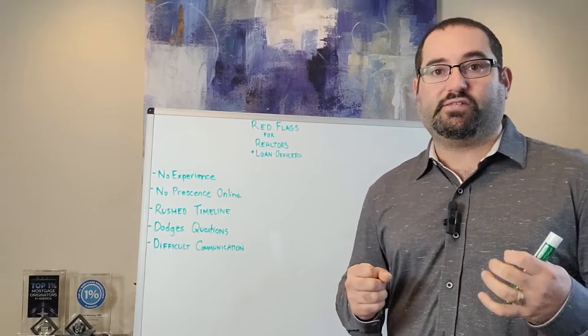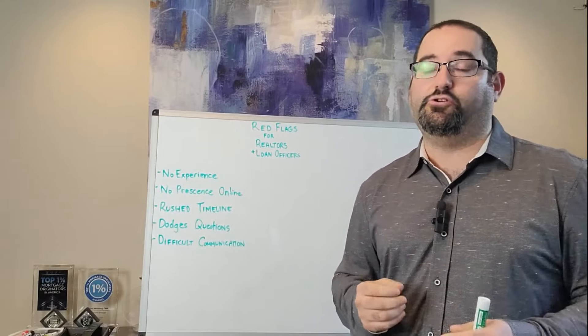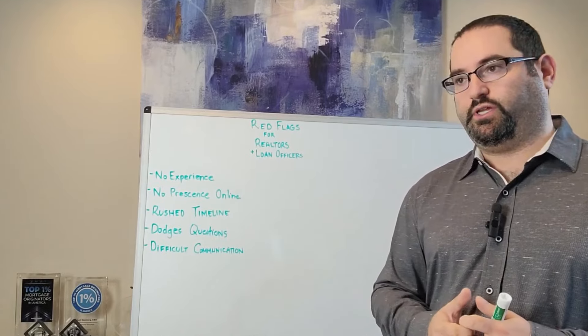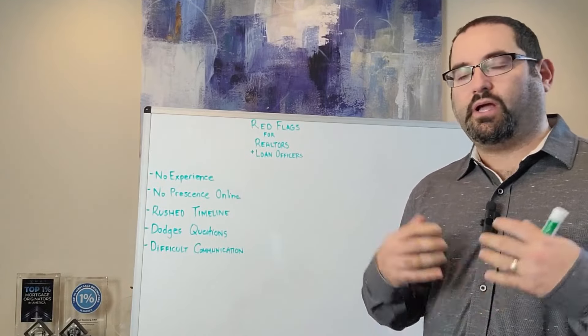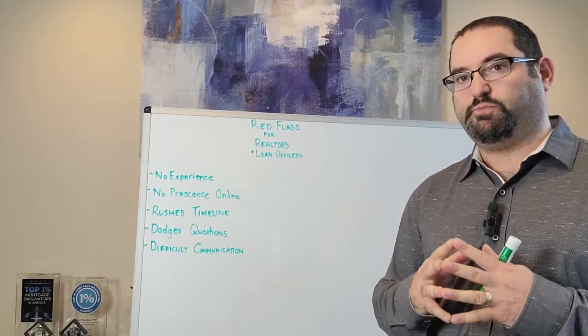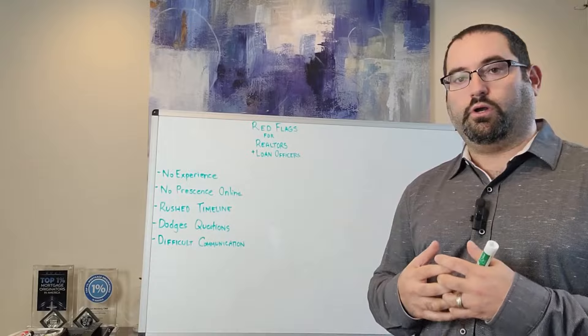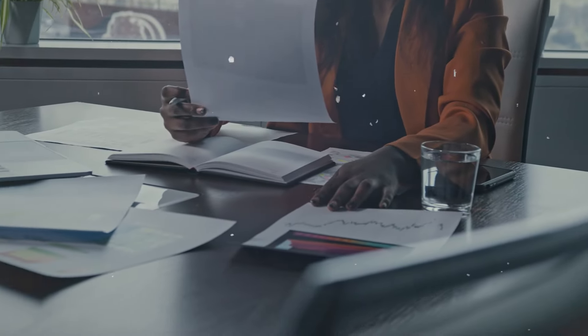The next thing to talk about on red flags for loan officers and realtors is going to be a rush timeline. You'll find a lot of times if somebody is new and inexperienced, they're going to be rushing you through the process because it's the only deal they've got. So they're going to be glossing over a lot of details and they're going to be adding a big sense of urgency to everything that they need you to do.